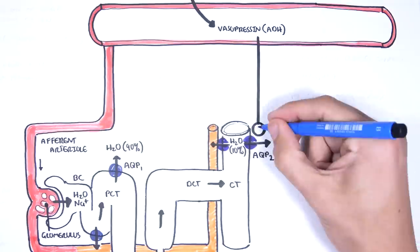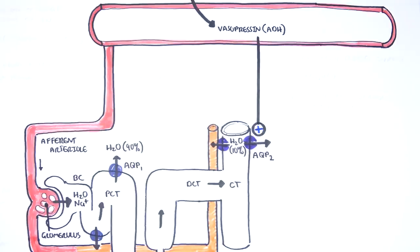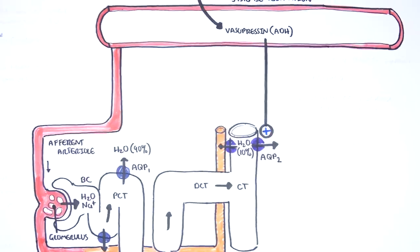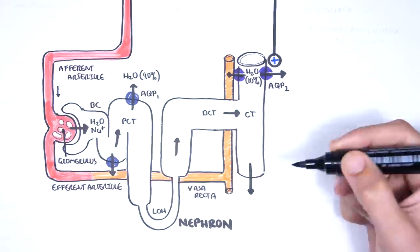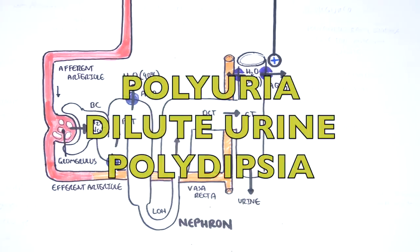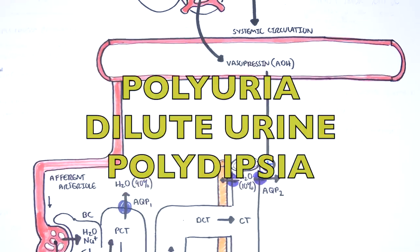ADH, also known as vasopressin, increases the expression of aquaporin type 2 channels at the collecting ducts, but also at the distal convoluted tubules, causing an increase in water retention. Diabetes insipidus is characterized by polyuria, dilute urine, and increased thirst.